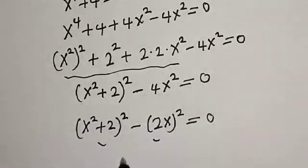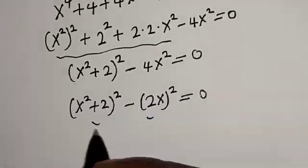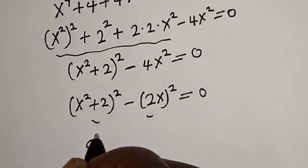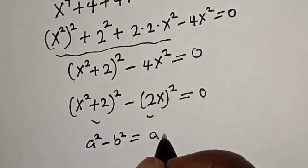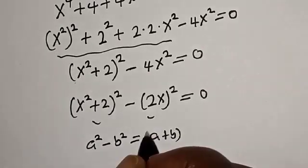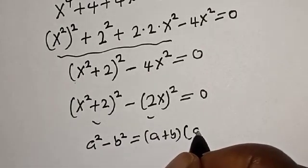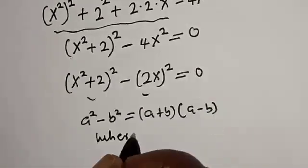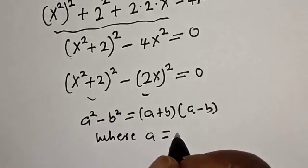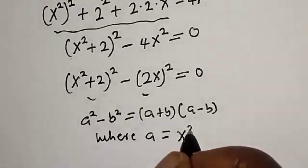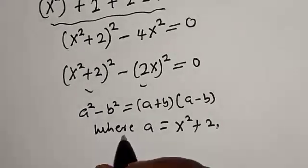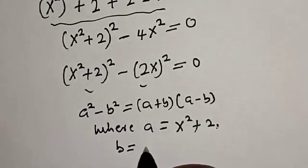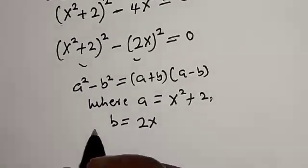Now if you look at this, this is a difference of two squares. Remember this rule: a² minus b² is equal to (a + b)(a − b), where a is equal to s² + 2 and b is equal to 2s. Now let's substitute.